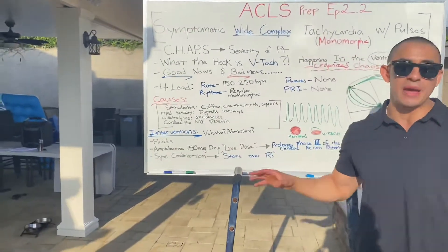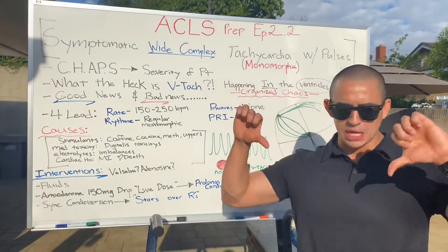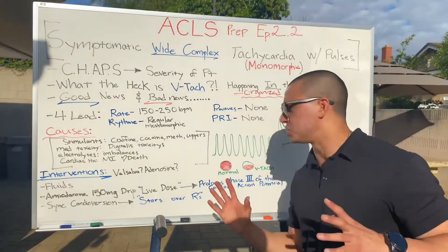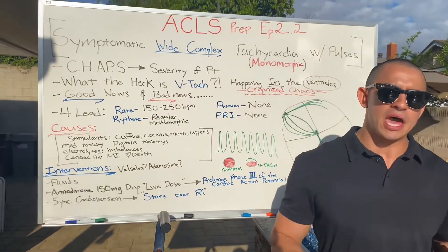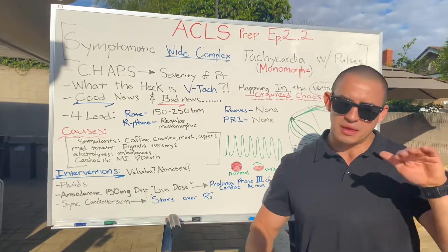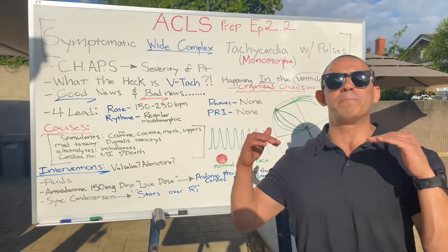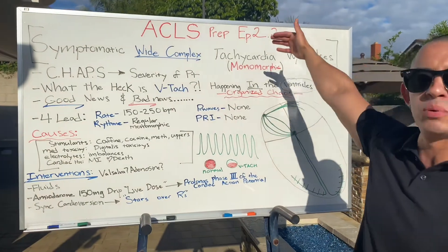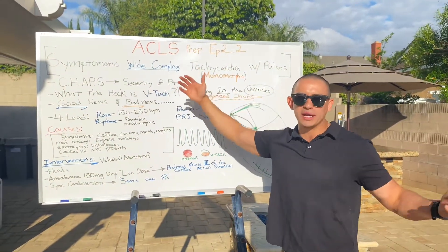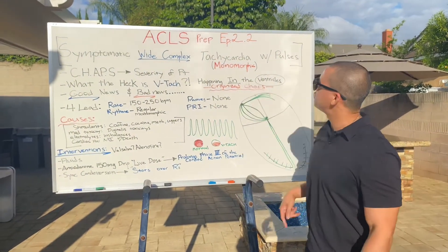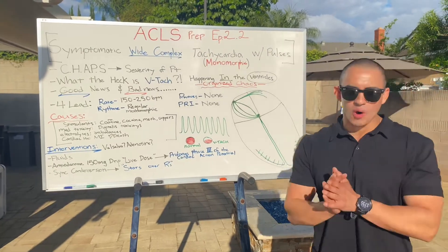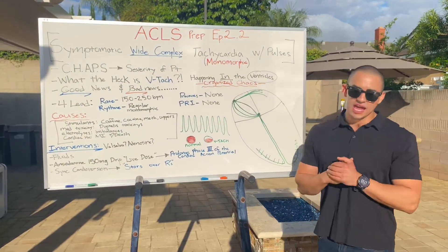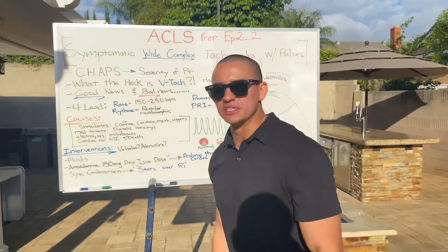Ultimately, it's your discretion as the paramedic, RN, PA, or doctor. Do you jump straight to sync cardioversion, or start with an amiodarone drip first? If the patient is severely symptomatic — blood pressure down, altered, near-syncopal — you have to decide what's best. Be that patient advocate. This has been Episode 2.2 of the ACLS Prep Academy — symptomatic wide complex tachycardia, V-tach with pulses, monomorphic in nature. Like, comment, and share. Thank you for your time.